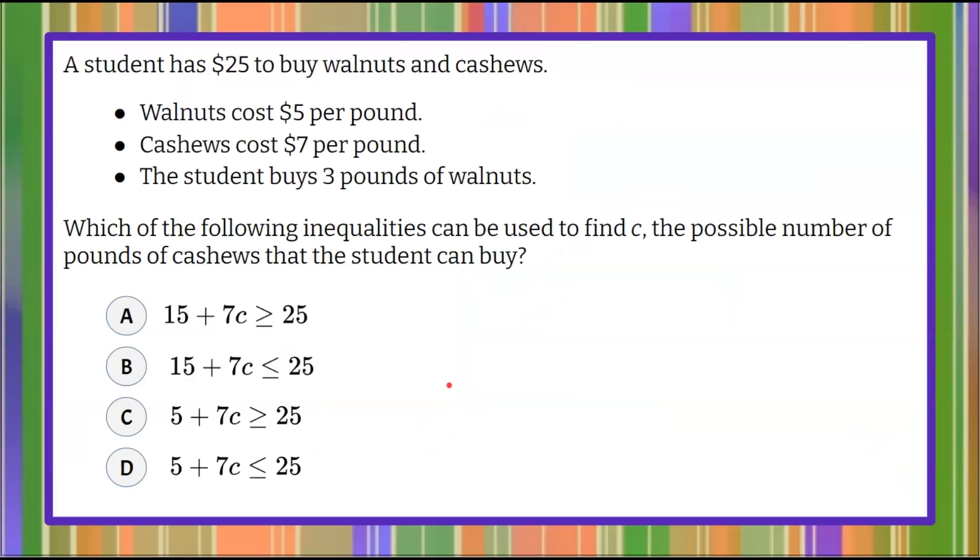Here's our question today. A student has $25 to buy walnuts and cashews. The walnuts cost $5 per pound. The cashews cost $7 per pound.